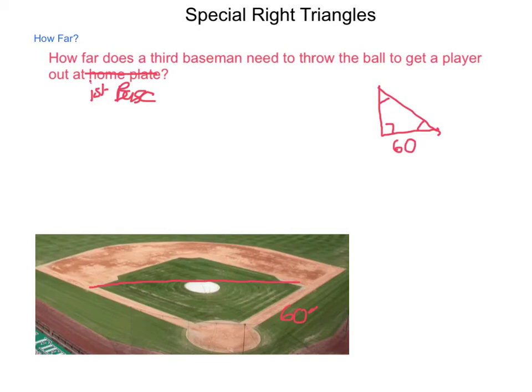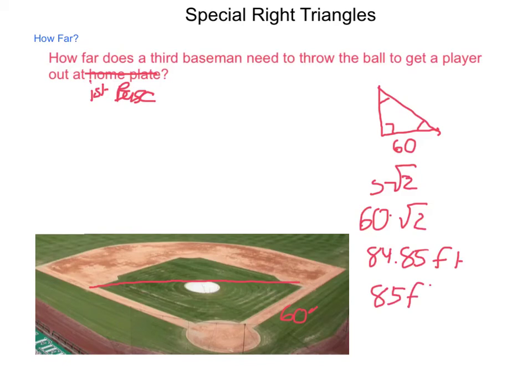Using our pattern, the distance from third to first is S × √2. With S = 60, we have 60 × √2, which equals approximately 84.85 feet. Rounding to the nearest foot, that's 85 feet. So the third baseman would have to throw the ball 85 feet to get the player out at first base. Anytime you see a square cut across its diagonal, we have this relationship: S, S, and S√2.